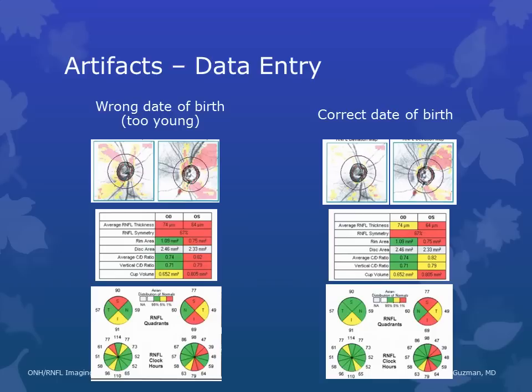Just like with visual field tests, accuracy of data entry is important. Date of birth matters because the patient is compared to an age-matched normative database — if you input the wrong date of birth, the patient is compared with normals who are either too young or too old. In this example, the patient was compared with normals who were too young, and when the date of birth was corrected, the results did not appear as abnormal as they did when compared with much younger people.